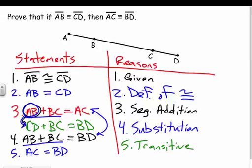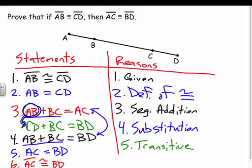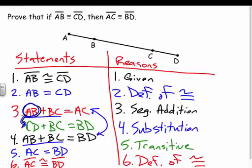Looking back, what am I trying to prove? That AC is congruent to BD. So now I go back to congruence and state: AC is congruent to BD. The reason is definition of congruence — remember, going from equality to congruence or congruence to equality is always the definition of congruence.